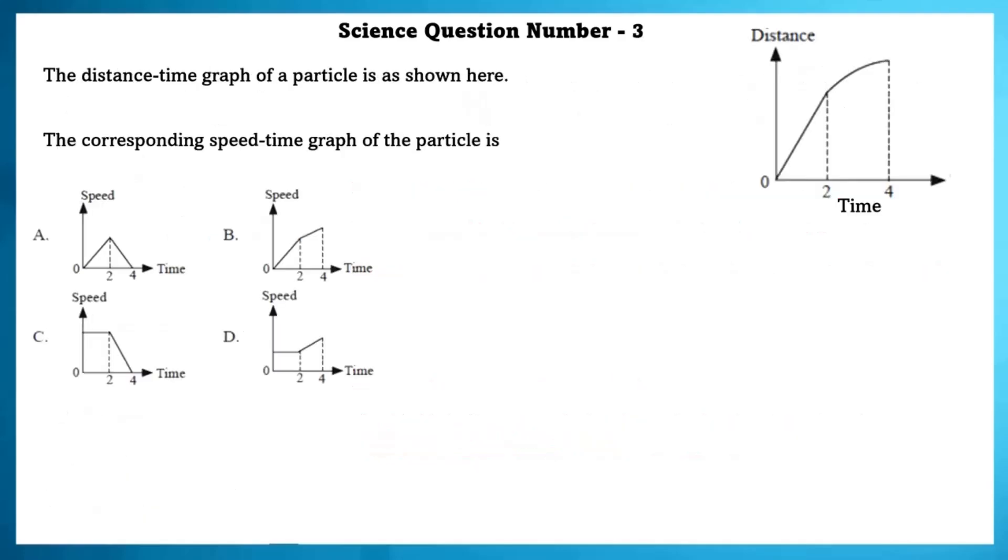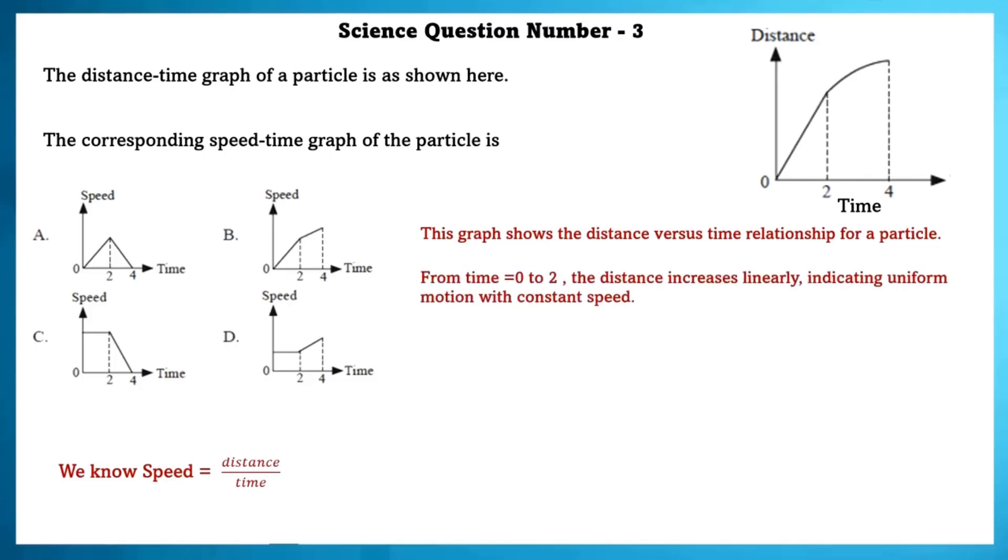Science Question Number 3. The distance-time graph of a particle is shown here. The corresponding speed-time graph of the particle is: We know that speed is equal to distance by time. This graph shows the distance versus time relationship for a particle. From time equal to 0 to 2, the distance increases linearly, indicating uniform motion with constant speed. Speed is constant, so the speed-time graph is a horizontal straight line.